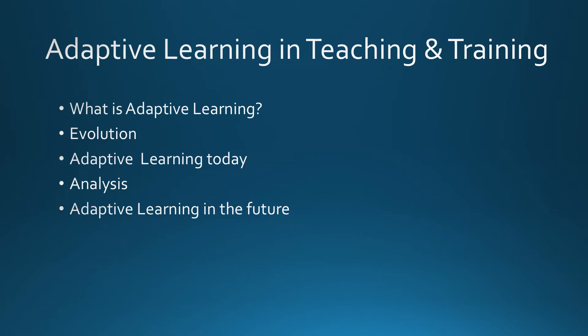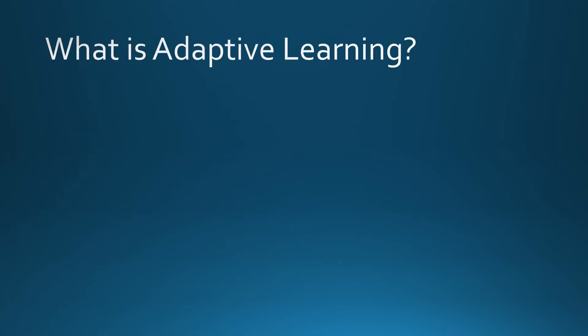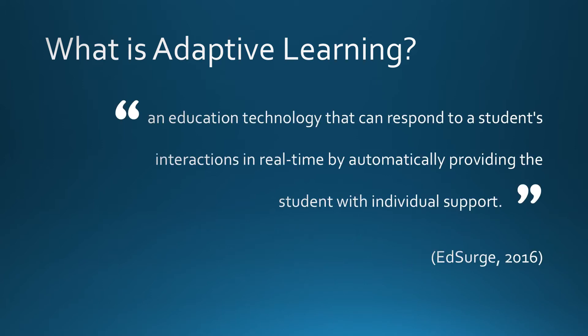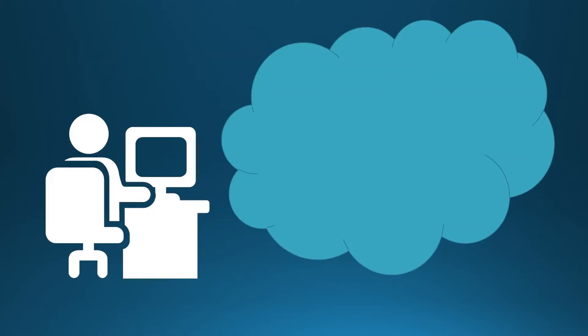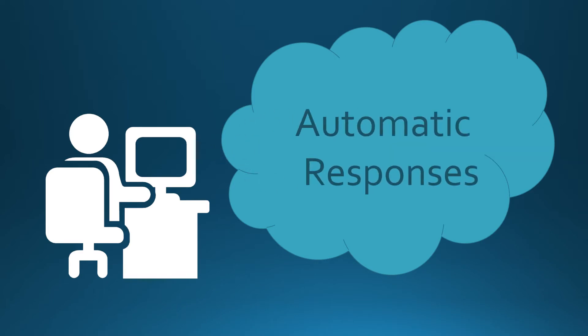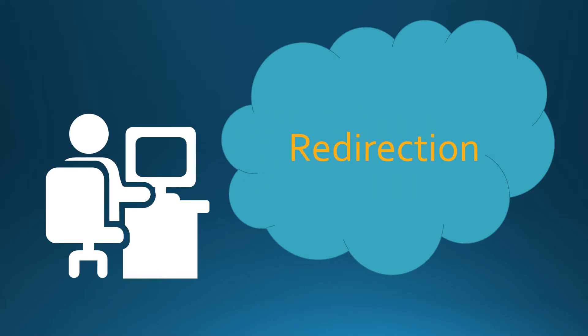Emerging technologies in adaptive learning. Sometimes used interchangeably with differentiated, personalized, and individualized learning, adaptive learning tools can be separated from these by defining them as an educational technology that can respond to a student's interactions in real time. Adaptive learning technologies use real-time data collection, automatic responses, and redirection based on the learner's unique choices.